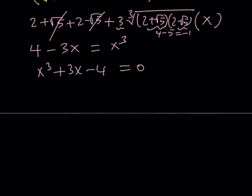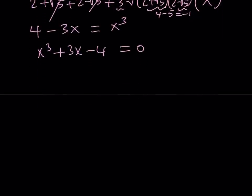This equation is going to come up more than once, but the idea is if you look at the sum of the coefficients for this polynomial, it is 0. So that means that x equals 1 is a solution. You can find it by inspection.